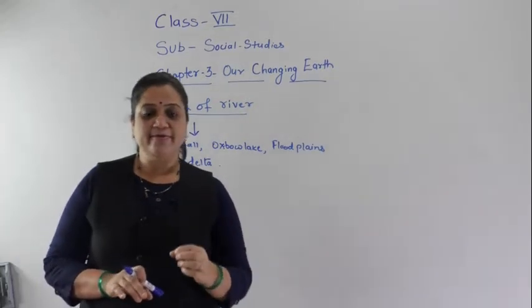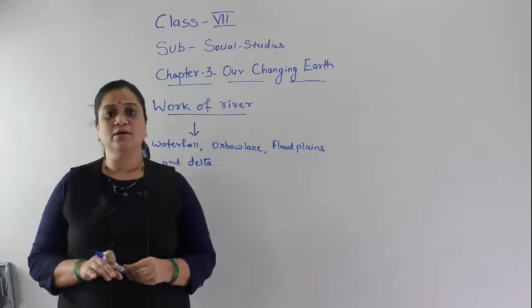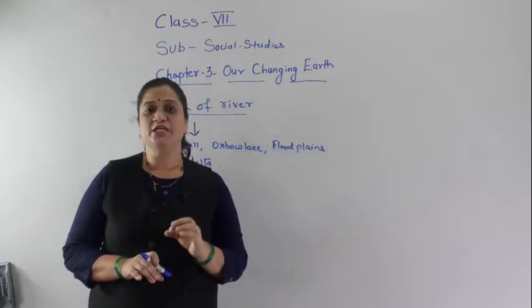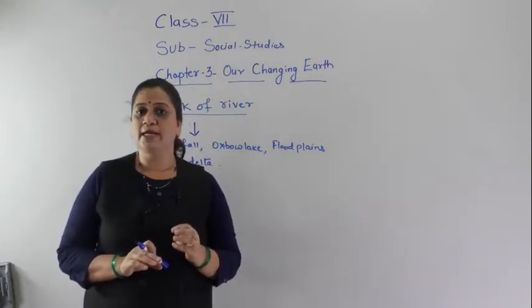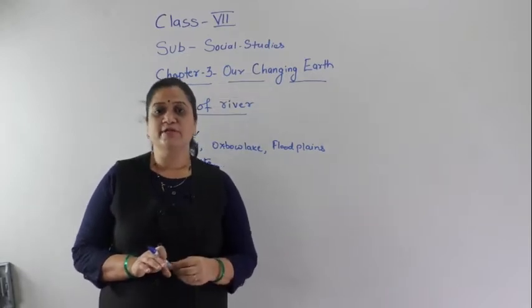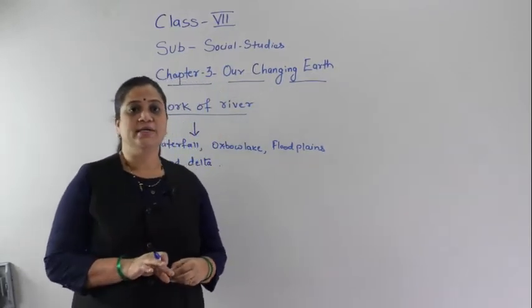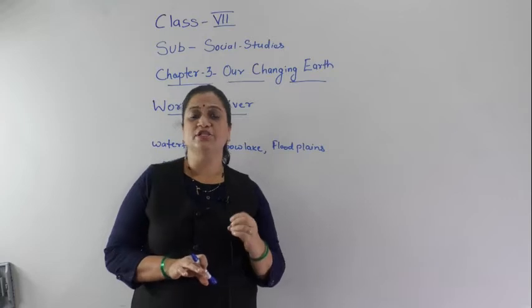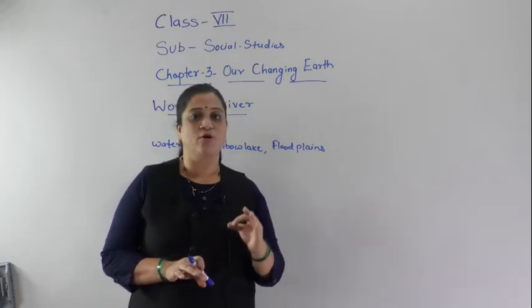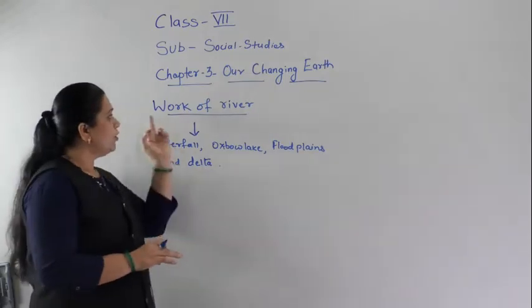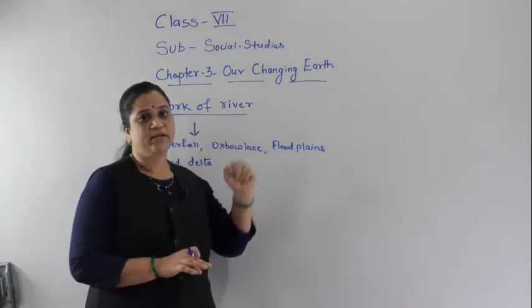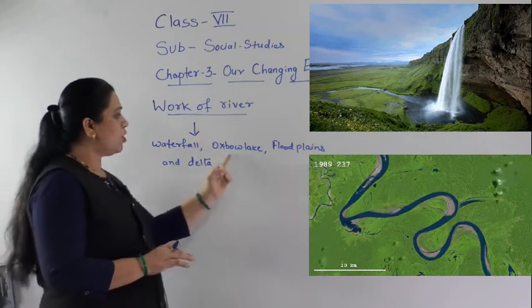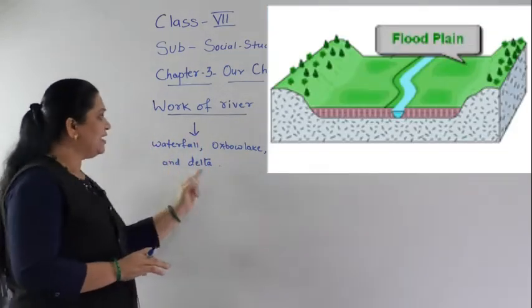The changes which took place on the earth's surface by the endogenic and exogenic forces are further changed by the action of wind, water, and ice. First of all, let us see how the river changes the landscape and how different landforms are formed by the river, such as waterfall, oxbow lake, flood plains, and delta.